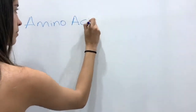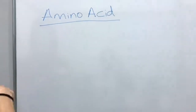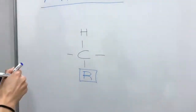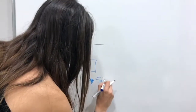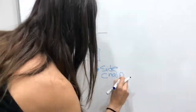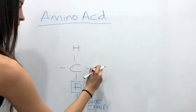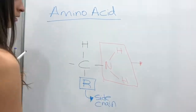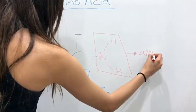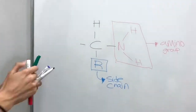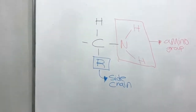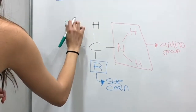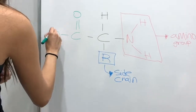Amino acid. An amino acid consists of an alpha carbon which is bonded to four things: one, a H atom; another, a side chain which can be a methyl group and many other things; on the other side it is bonded to NH2, which is the amino group; and lastly it is bonded to COOH, which is the carboxylic group.